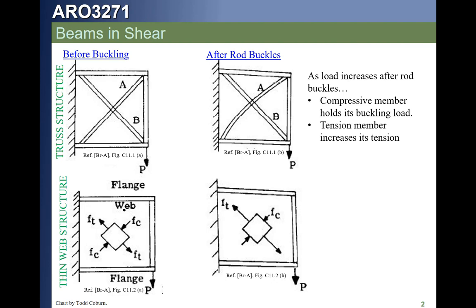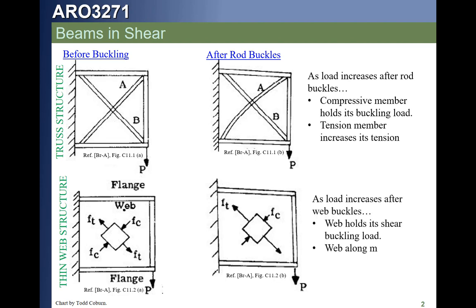Testing has revealed that these beams, while they might buckle — if the web is thin, it will buckle, often at a very low stress level — the ultimate capability of this beam is significantly more than the buckling allowable of that web. If you account for the diagonal tension effects, we can predict roughly how much shear this beam ought to be able to take when the web buckles in shear but carries the load in what's called diagonal tension. That's what we're going to study today.